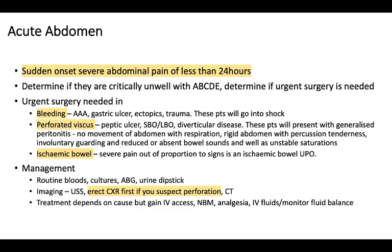Urgent surgery may also be needed for a perforated viscus — for example a peptic ulcer, small or large bowel obstruction that has built up and perforated (especially in closed loop obstruction where pressure builds between two obstructed points), and diverticular disease. These patients might present with generalised peritonitis: absent abdominal movement with breathing, a very rigid abdomen, percussion tenderness, involuntary guarding, reduced or absent bowel sounds, and unstable observations.